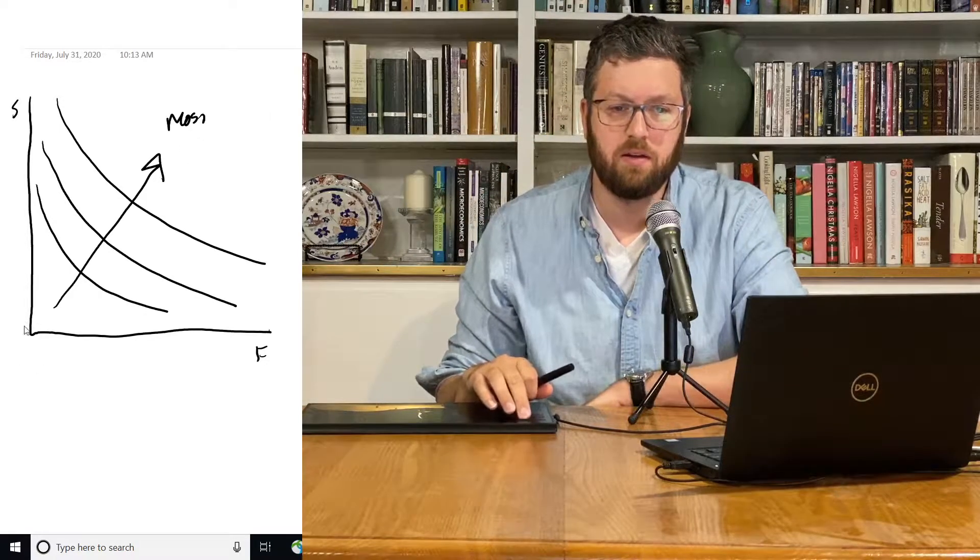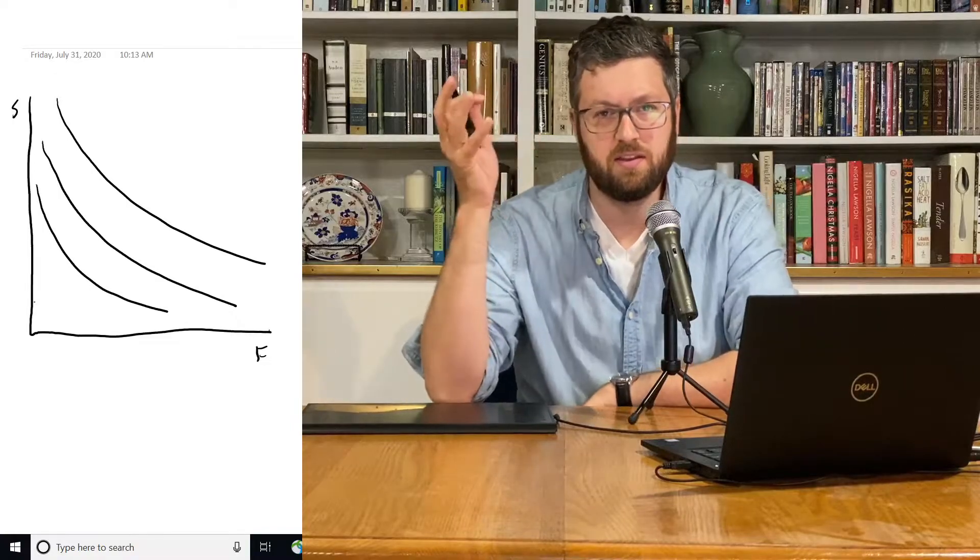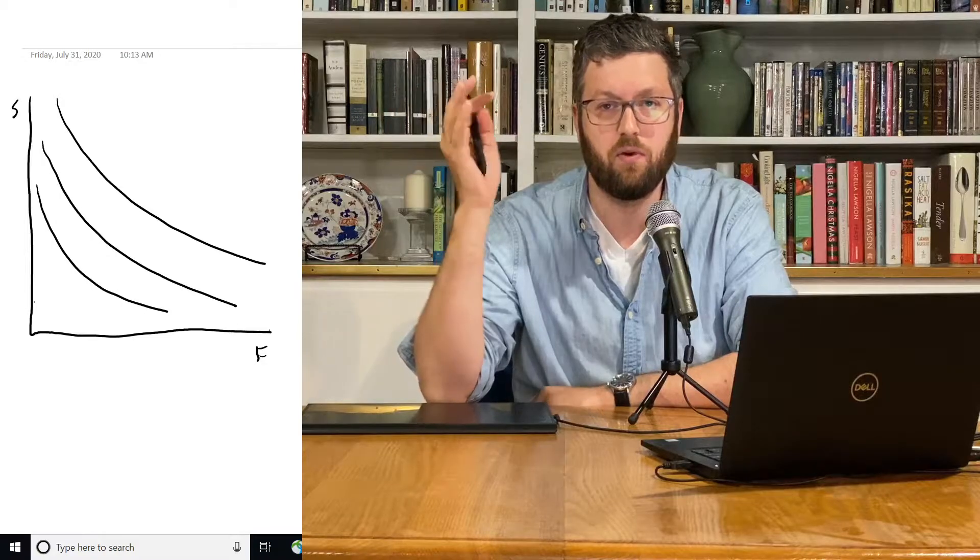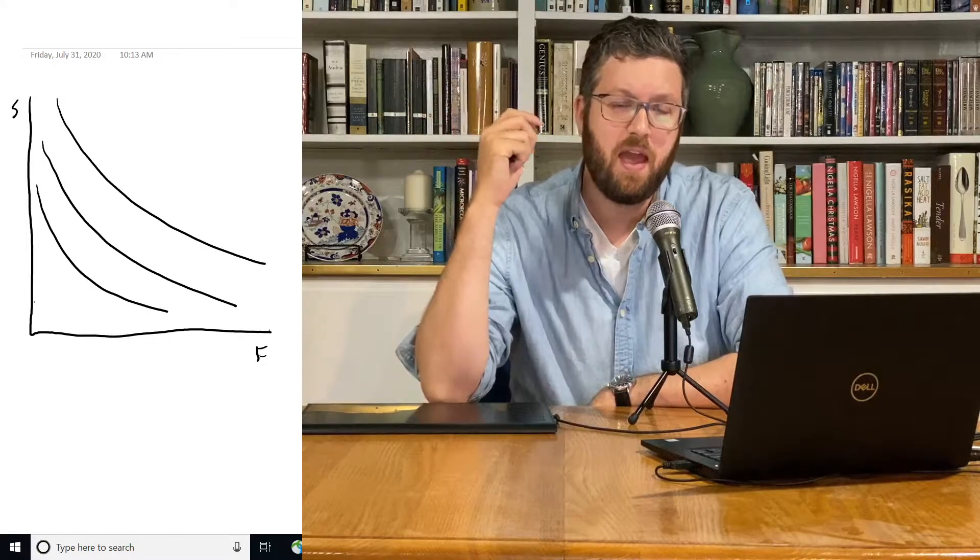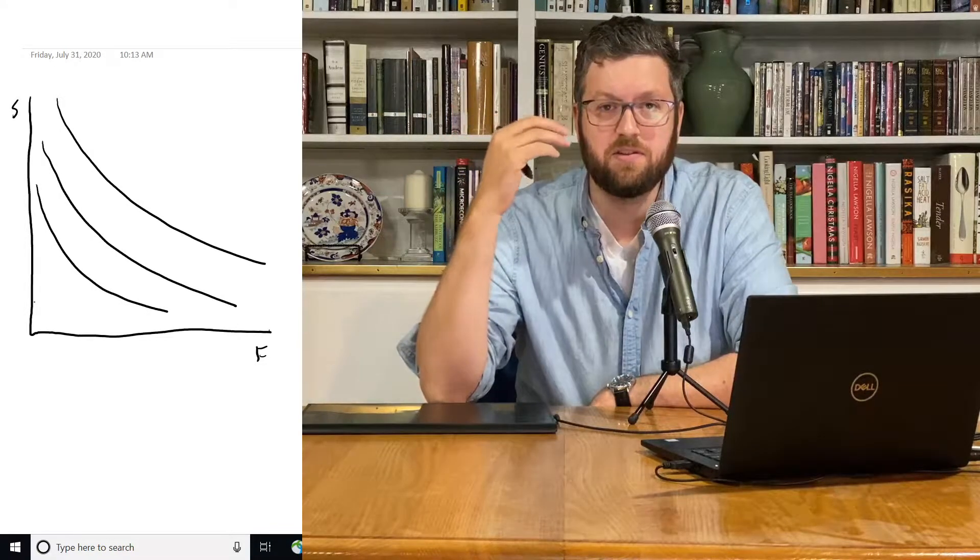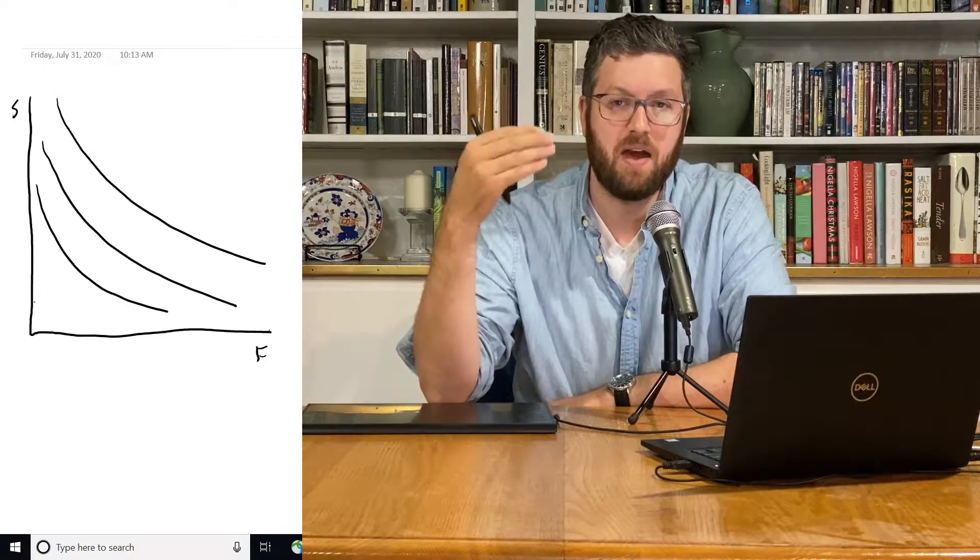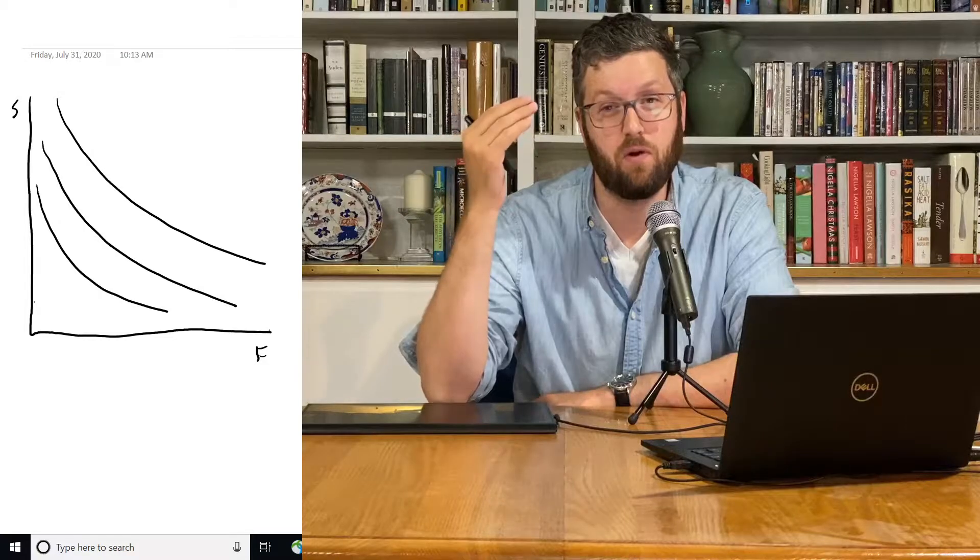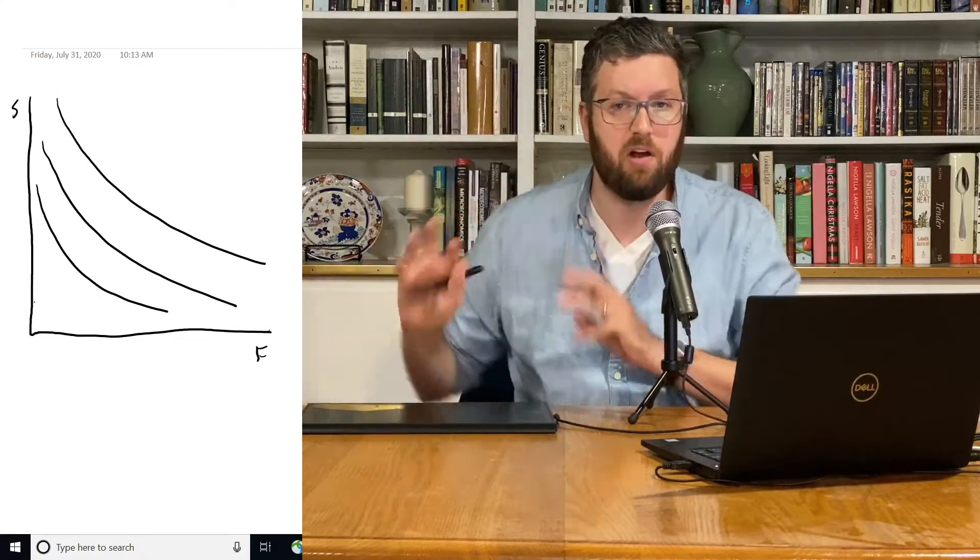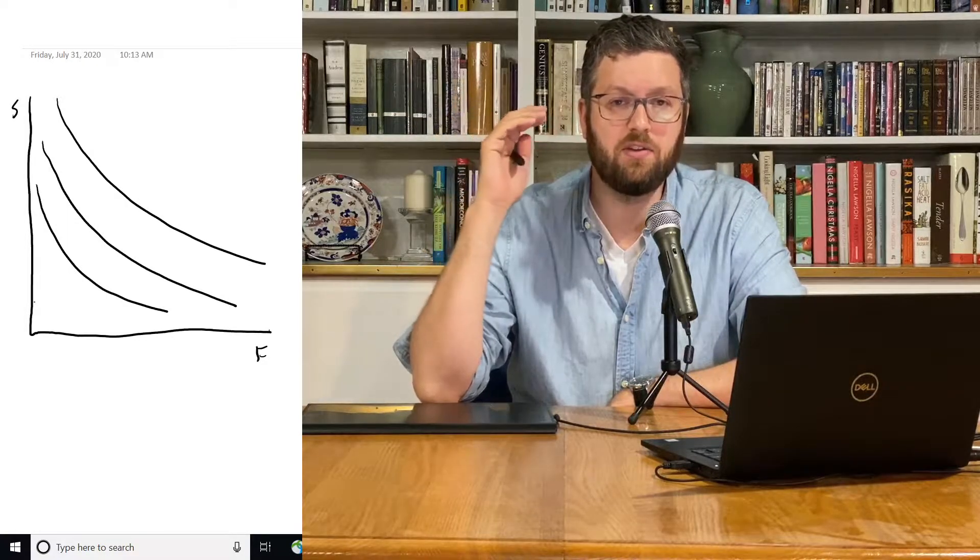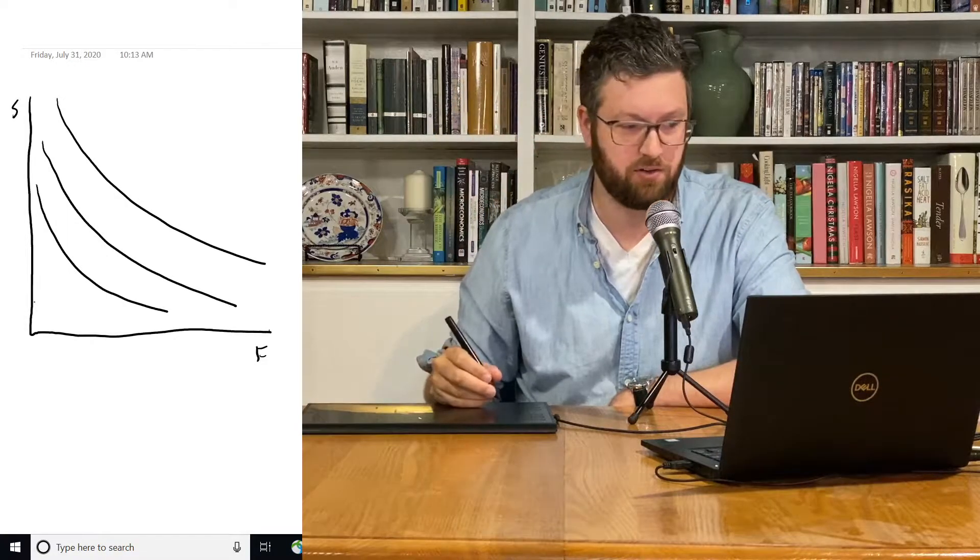Now, can we go any further? Well, this actually looks a lot like those isoquants that we drew for production technology. In fact, economists are really lazy, and we're going to take all of the mathematical machinery that we used for production technologies, and we're just going to relabel all the variables basically, and come up with a new function called a utility function instead of a production function.